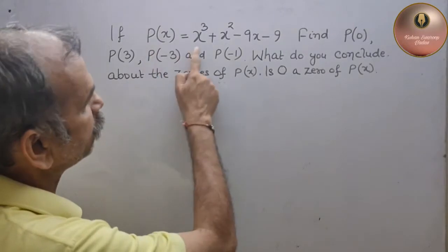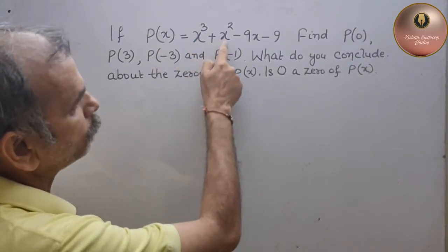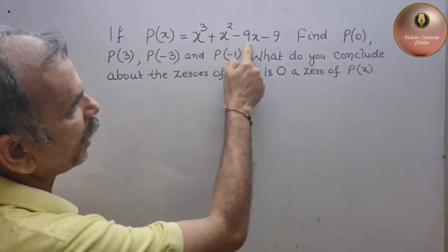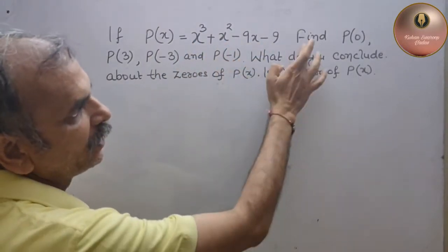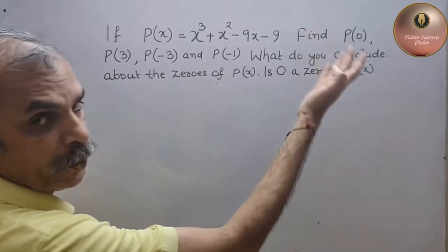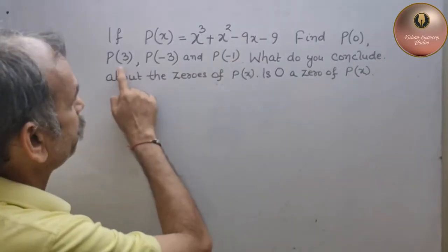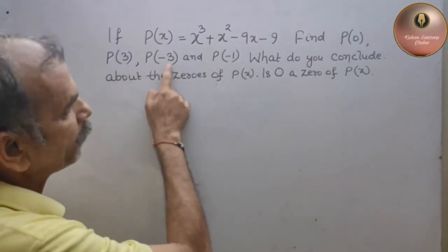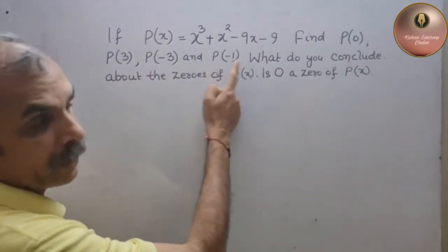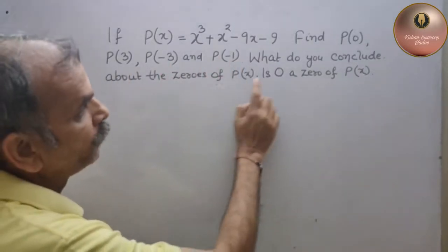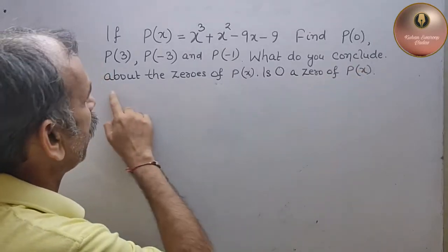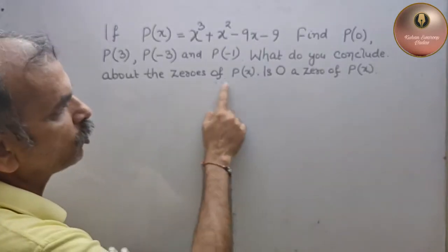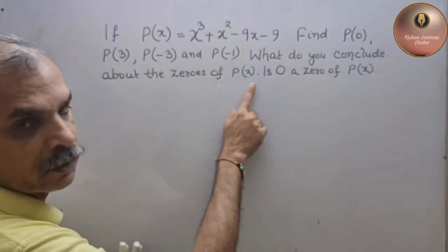If p(x) is equal to x cube plus x square minus 9x minus 9, find p(0), p(3), p(-3), p(-1). What do you conclude about the zeros of p(x)?